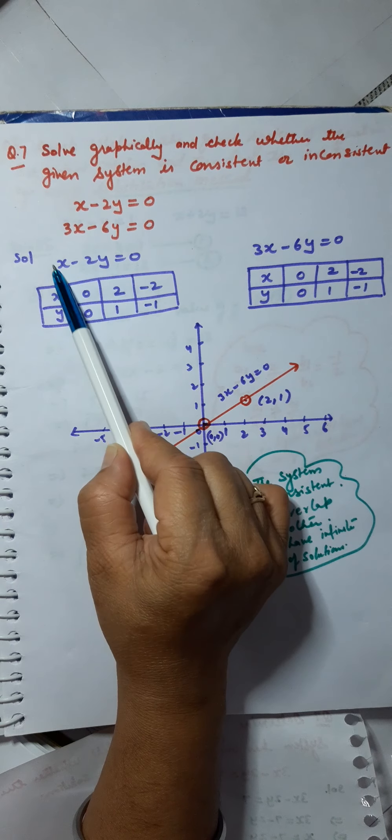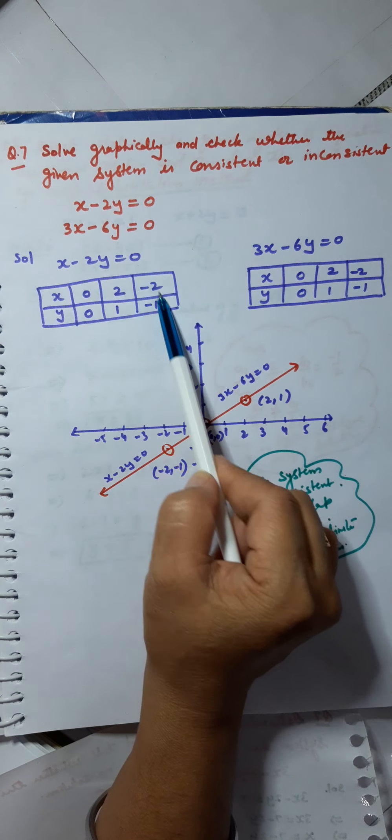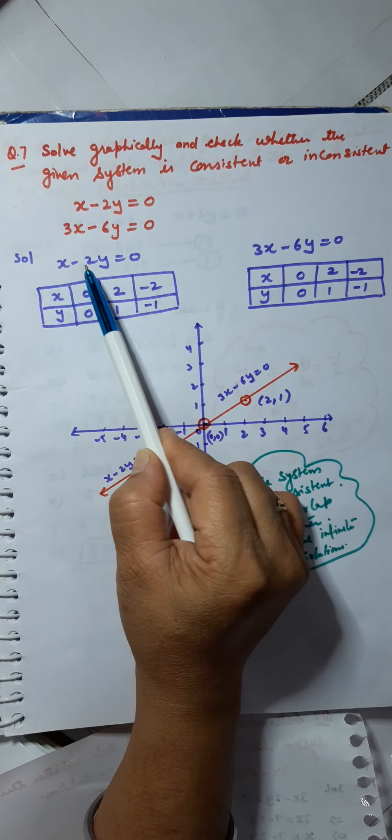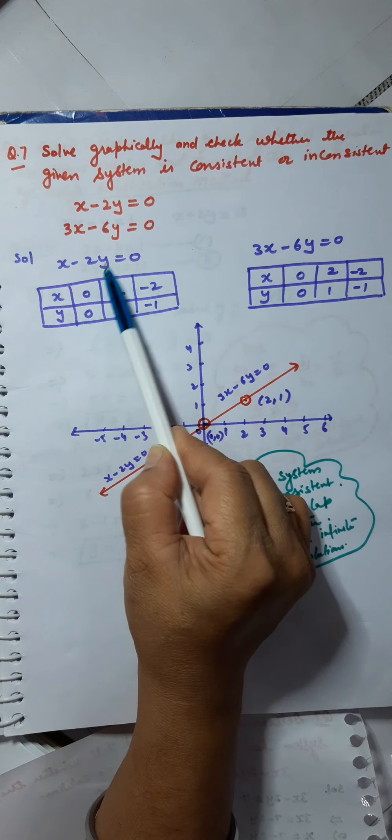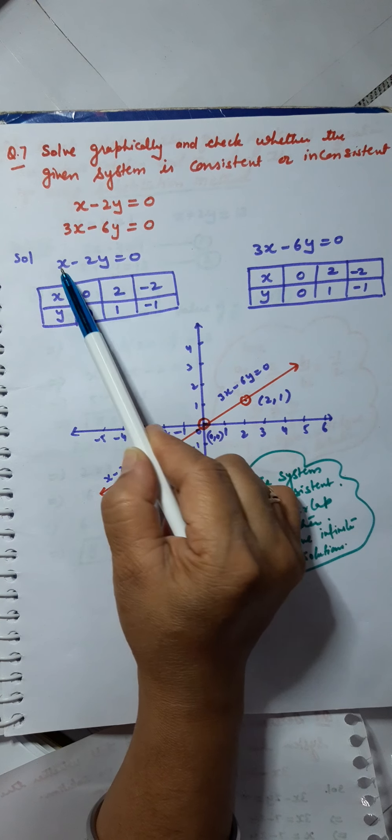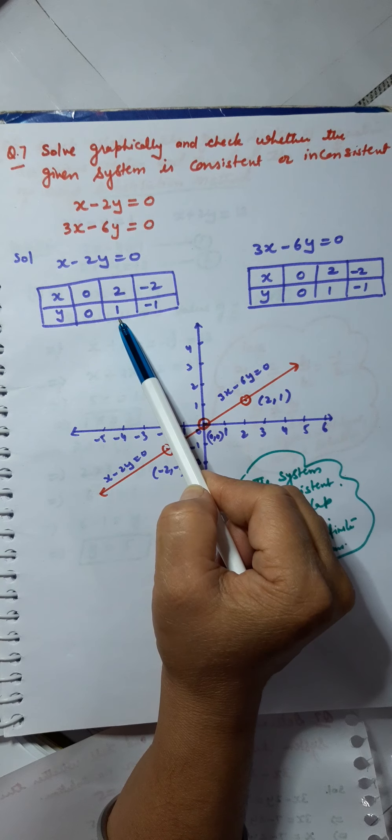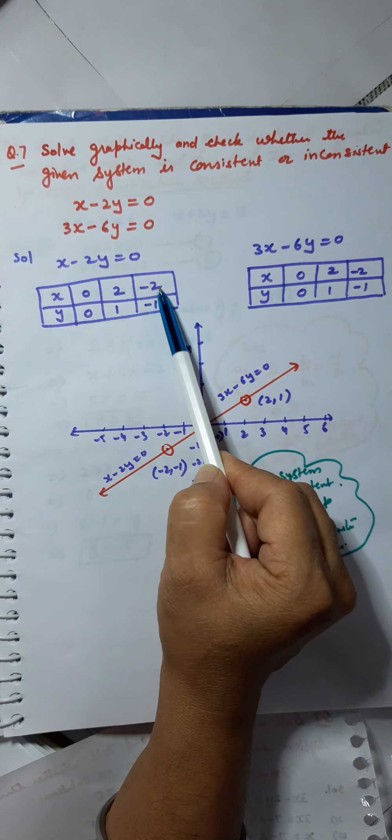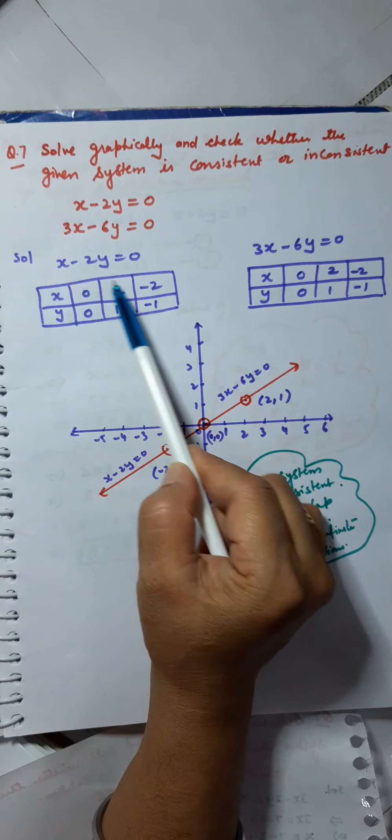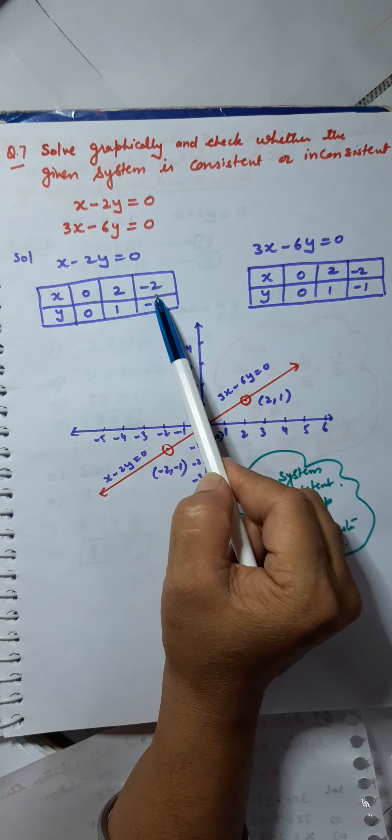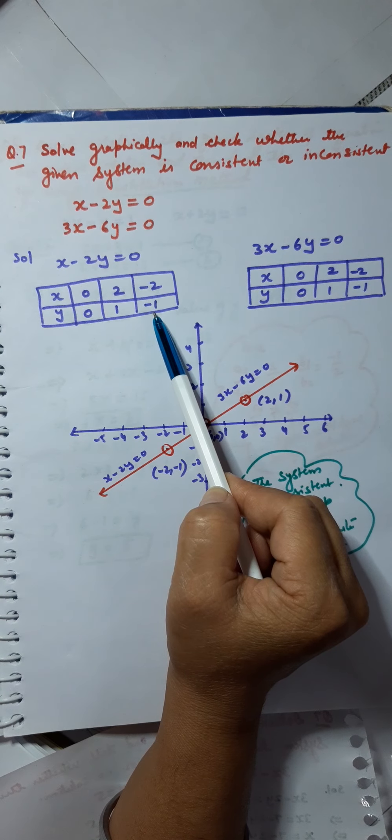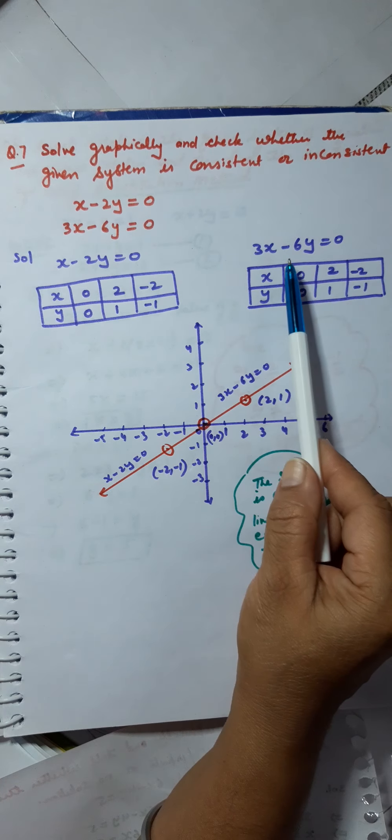From using this equation, I get this table of values. Put x equals 0, y will be 0. Put x equals 2, you will get y equals 1. Put x equals minus 2, and you get y equals minus 1.